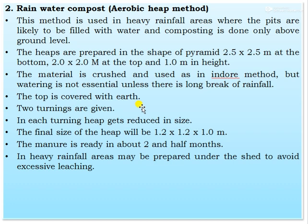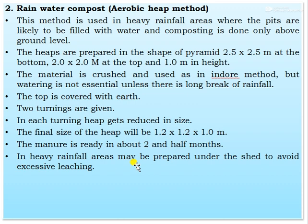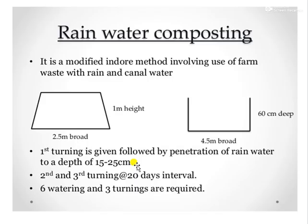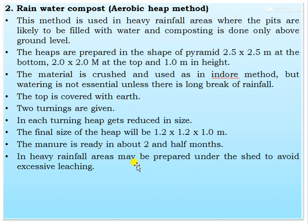The next method is rainwater compost, also called the aerobic heap method. This method is used mainly in high-rainfall areas where pits are likely to be filled with water, so composting is done only above the ground level. The heaps are prepared in the shape of a pyramid — 2.5 by 2.5 meters at the bottom, 2 by 2 meters at the top, and 1 meter in height. The material is crushed and used the same as in the Indore method, but watering is not essential unless there is a long break in rainfall. The top is covered with arched material. Two turnings are given, and each turning reduces the heap in size. The final size of the heap will be 1.2 by 1.2 by 1 meter, and the manure is ready in about two and a half months.